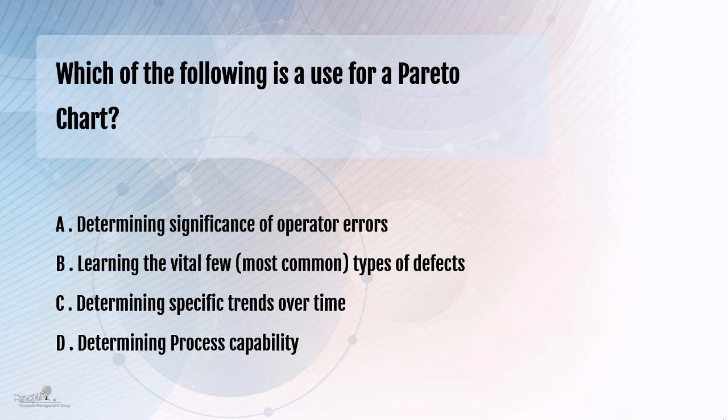The options are: determining the significance of operator errors; learning the vital few or the most common types of errors or defects which are occurring; determining trends or specific trends over time; and determining the process capability.